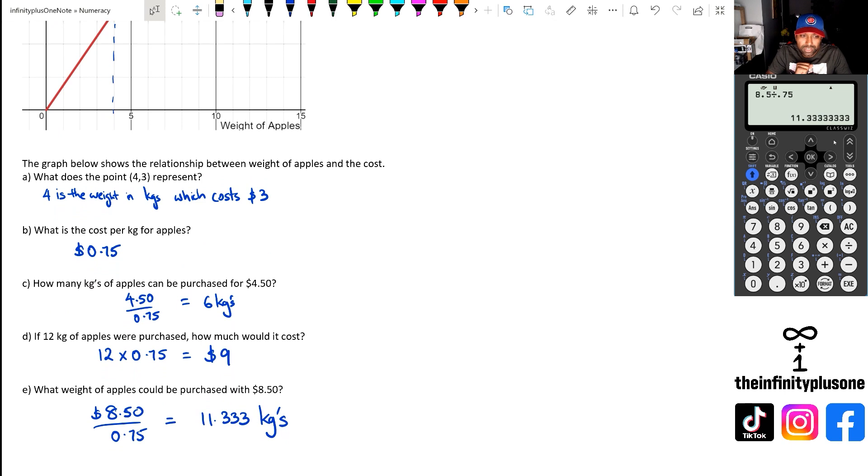That's part of the reason why for question E, I've actually written the answer as 11.333 kgs, because it is possible to get 11.333 kgs. But if we have a whole number, like number of people, then you can't really have 11.5 people or 11.33 people. That is just something to keep an eye on as you work through these types of problems.